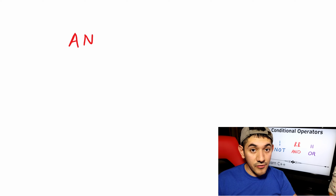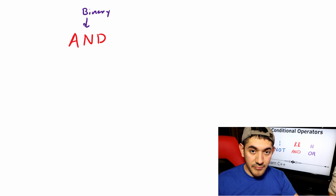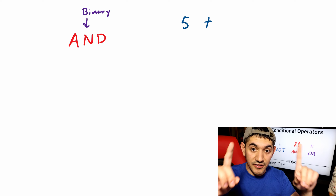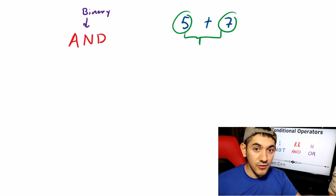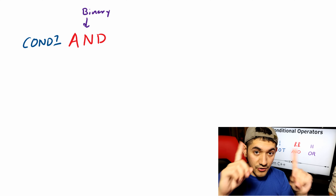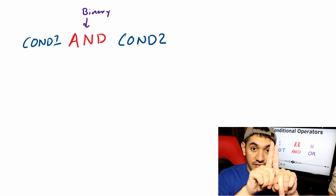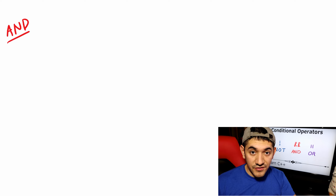The and operator, unlike the not operator, is called a binary operator, and it's very similar to all the other arithmetic operators. For example, addition: when you say 5 plus 7, you take two numbers and add them to produce one number, 12. The and operator works the same way — it takes two conditions, and their results are combined to produce one result. It checks the values of the two conditions and will always give you a false result unless both conditions are true.